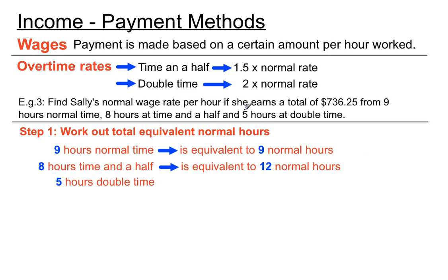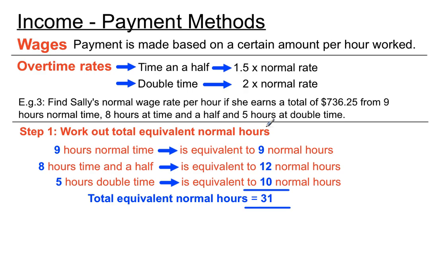So here, this next section, eight hours at double time is equivalent to, if you're getting paid twice as much as you normally would and you work five hours, that's as if you worked 10 hours. So the total equivalent normal hours, if we add those right-hand side numbers up, is 31 normal hours. So we had nine from that one. We had eight lots of 1.5 making 12 there. So we got nine, 12. And we had five hours of double time making 10. So that's where we got those numbers, made 31 there. So normal hours are just normal. Eight hours at time and a half are worth 12 hours. And five hours at double time is worth 10 hours of pay. So she's getting paid as if she worked 31 normal hours.